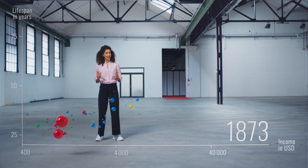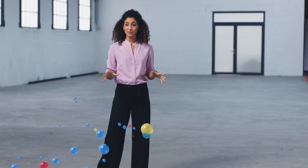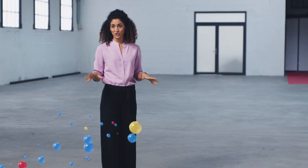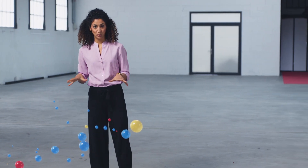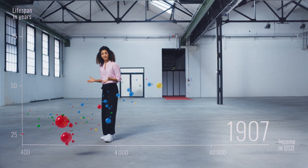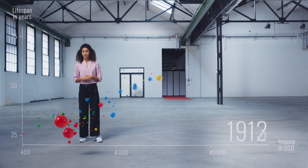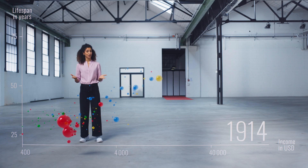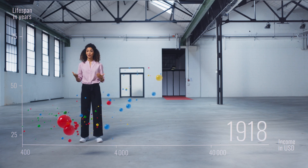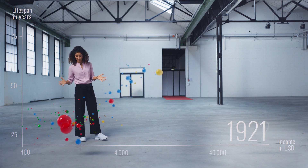But this doesn't happen just in a straight line. Let's slow down for the 20th century and have a closer look. We can see multiple dips which are the effects of global events — for example, decreases in life expectancy due to the Spanish flu or the two world wars, or economic setbacks during the Great Depression after the world economic crisis.